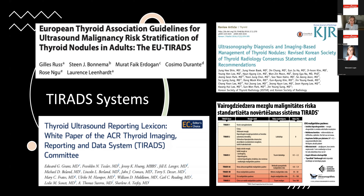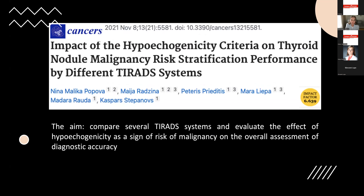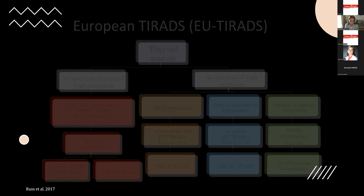Sensitivity is high across systems, but different stratification criteria maintain accuracy and specificity at suboptimal levels. In the period 2019–2021, a prospective multicenter study involving Latvian-certified radiologists compared these four TIRADS systems: the Latvian modified Kwak et al. version, European, Korean, and ACR TIRADS — to assess the impact of hypoechogenicity as a malignancy risk factor on overall diagnostic accuracy.